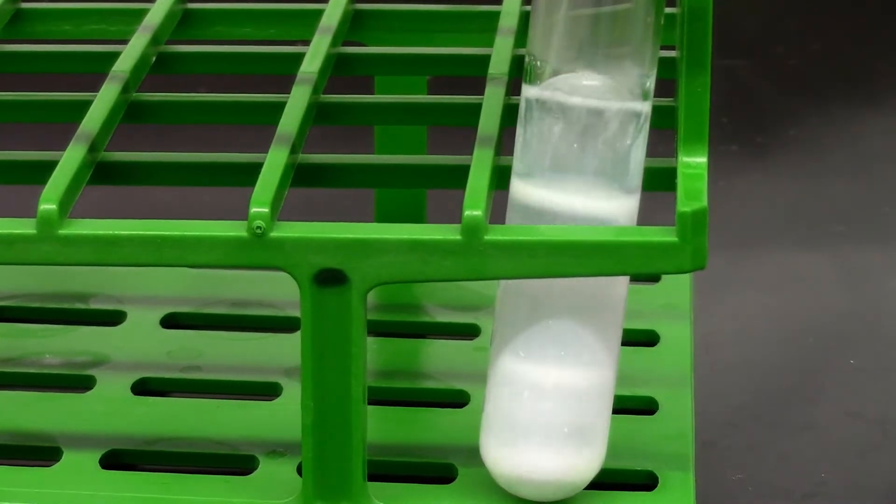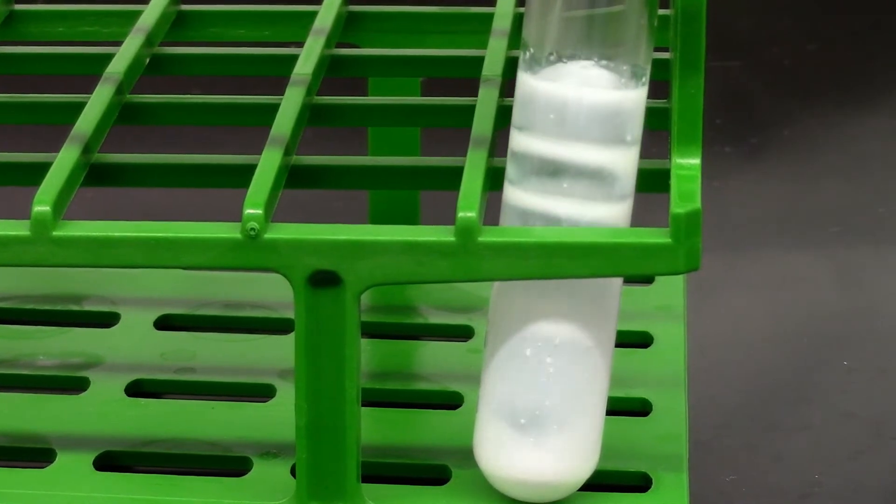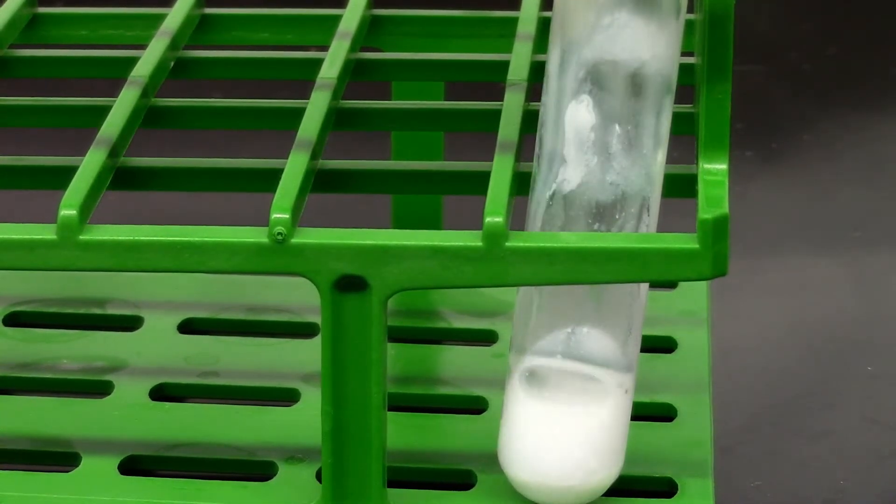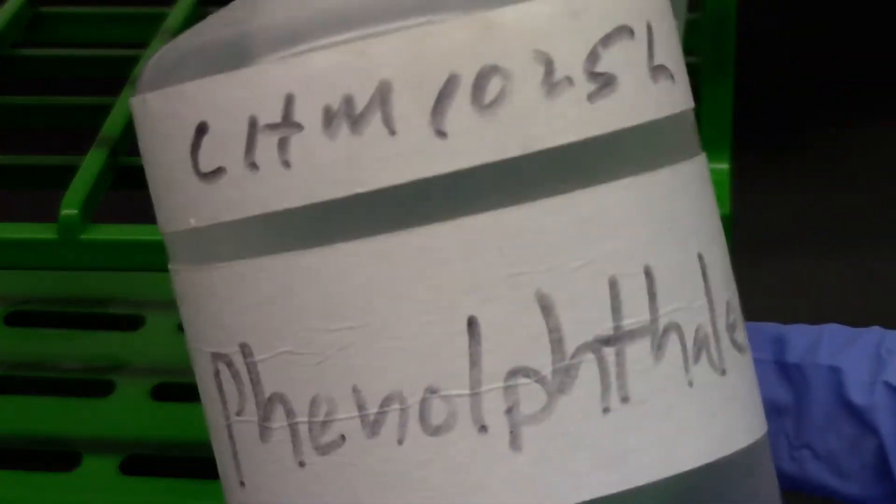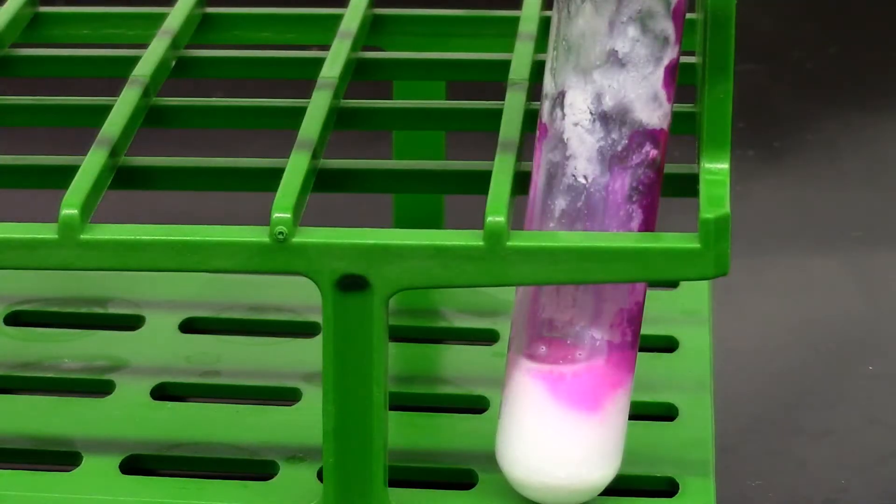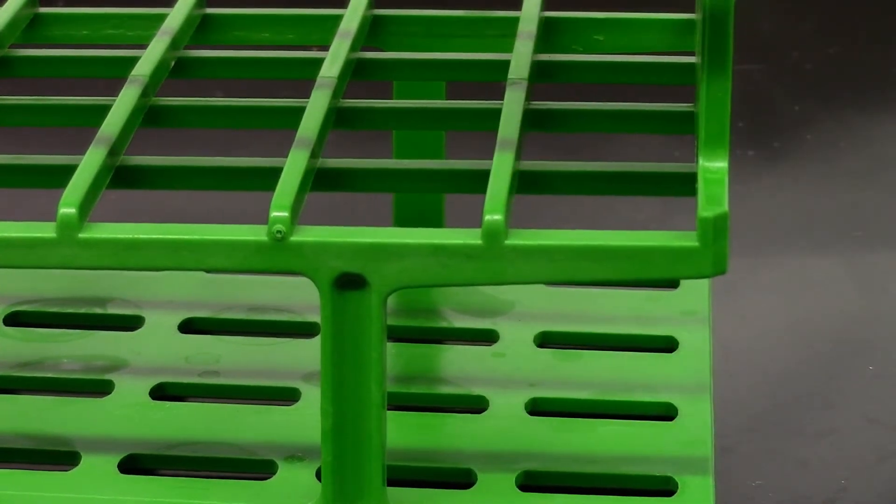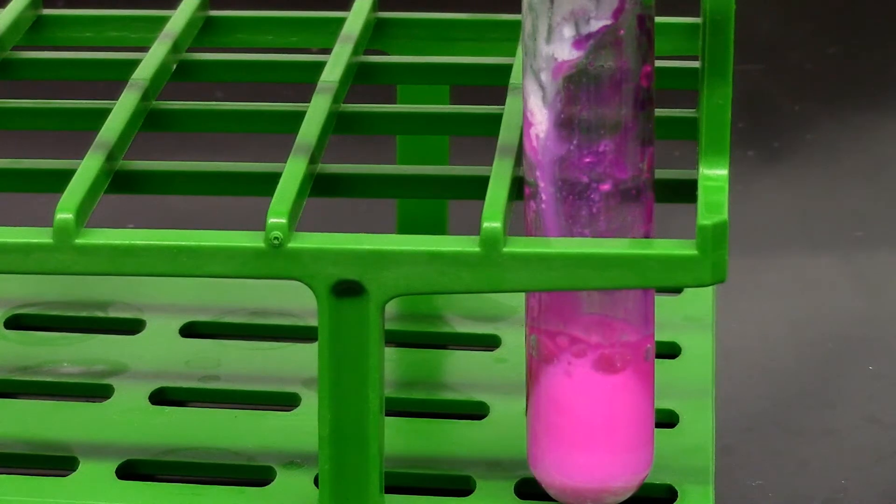You see gas evolving. That's hydrogen gas. You see the white precipitate which is calcium hydroxide. I'm going to add a couple drops of indicator phenolphthalein. And you can see it turns it pink which tells you it's basic and calcium hydroxide is being formed.